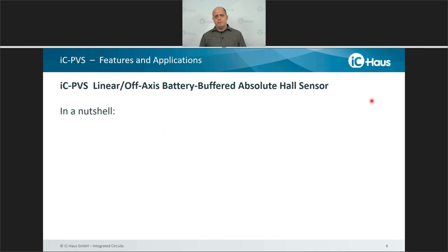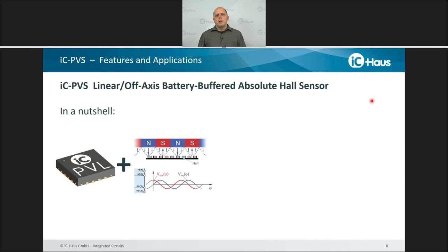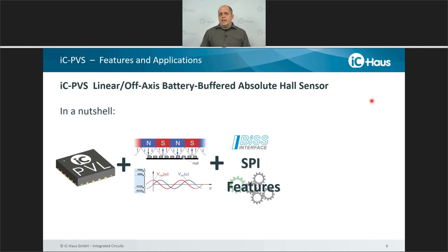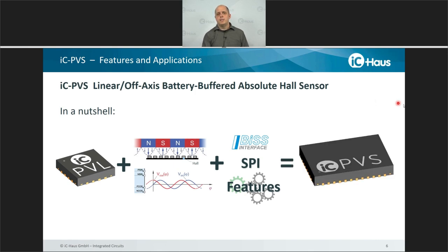So what is the IC PVS? In a nutshell, it is our well-known IC PVL battery buffered multi-turn encoder IC combined with a configurable hall line that can be used for scanning off-axis or linear targets. This comes together with a differential sine-cosine output that provides the analog signals of this hall sensor line. We then added our well-known BIS interface, an SPI interface, added some features, and there we arrived at the IC PVS.